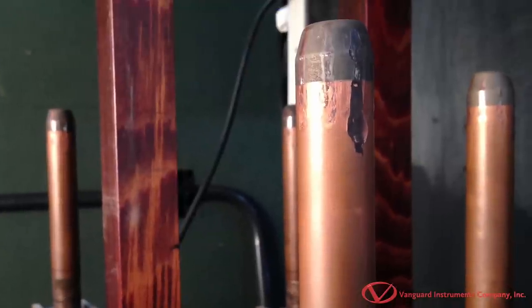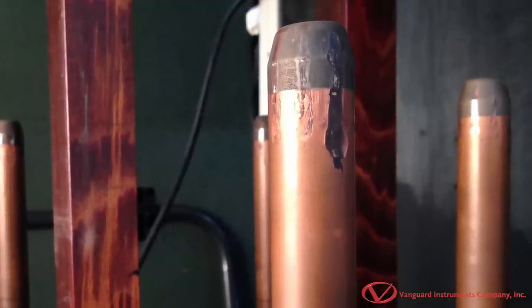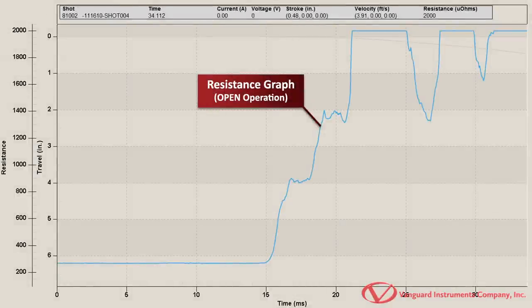Contact wear is also another important factor that can affect a breaker's performance. A dynamic resistance test can be performed and the resistance chart can be used to analyze the breaker's contact condition during the circuit breaker operation.